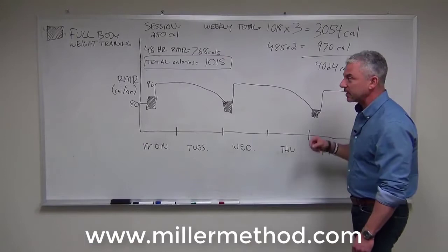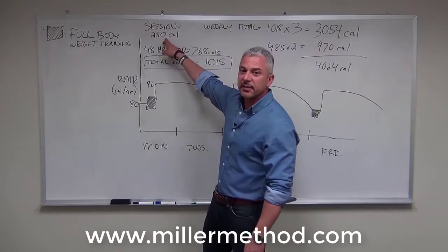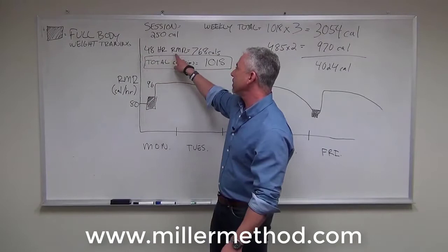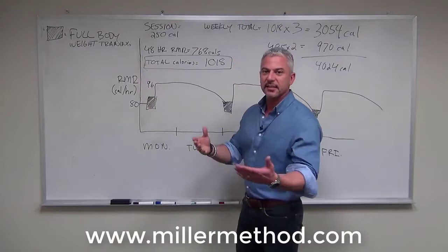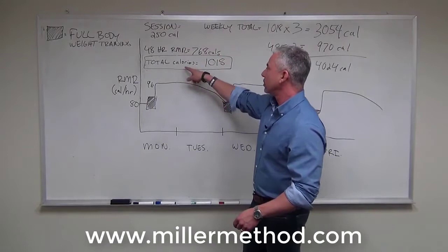So essentially what we've done is we burn 250 calories during the actual weight training session, but that increases our resting metabolic rate for 48 hours, and that 48-hour increase results in an additional caloric burn of 768 calories. So the 20 percent increase over 80 is 96—16 calories times 48 hours. If we add that to the session, our total caloric burn from that resistance training session is 1,018 calories.